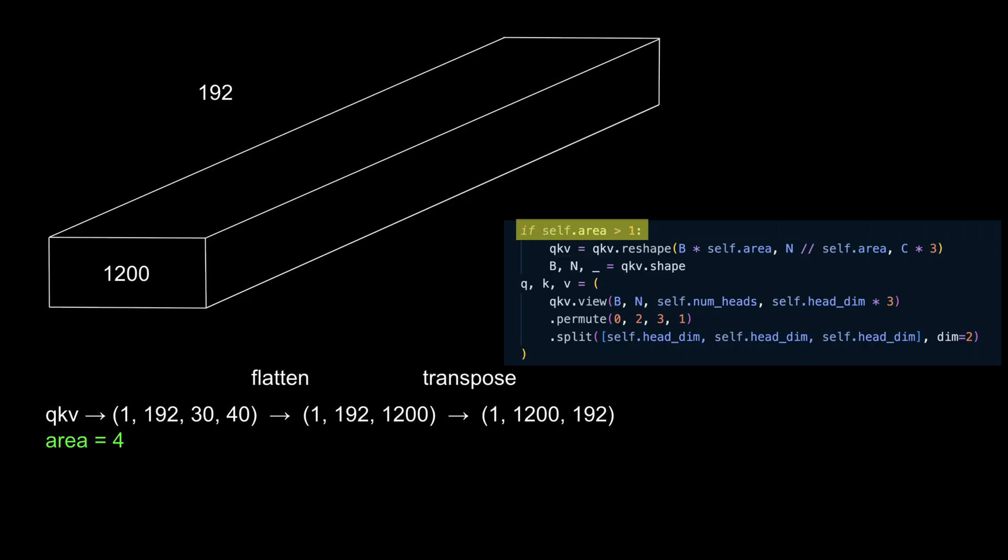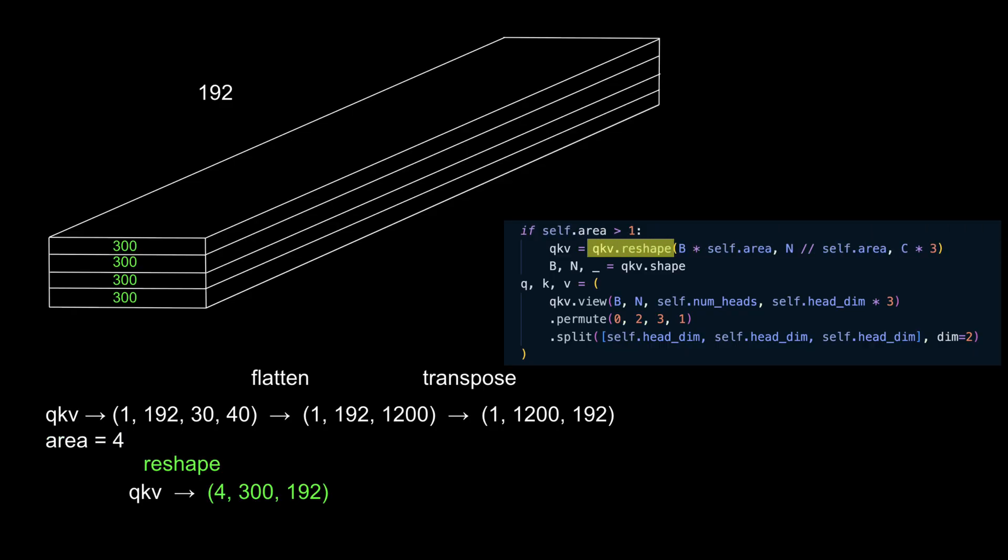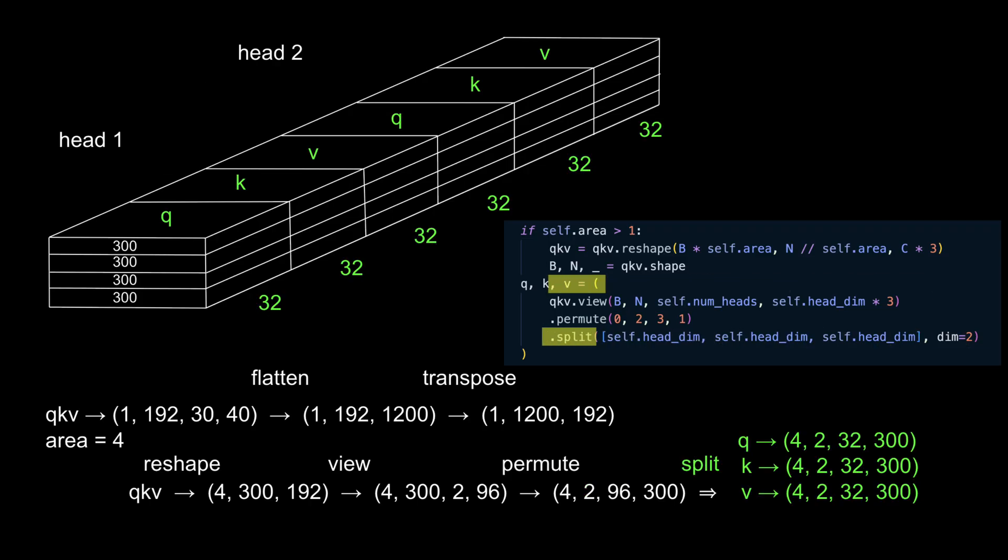Again, since the area is 4, we'll start by reshaping the tensor into 4 separate areas. Next, we return a new tensor with the same data, but a different shape. This step begins to reveal how the 192 features are actually composed of 96 features for each of the two attention heads. Then, using Permute, we rearrange the dimensions of the tensor. And last, but certainly not least, we split the tensor into the Q, K, and V components, as shown here.